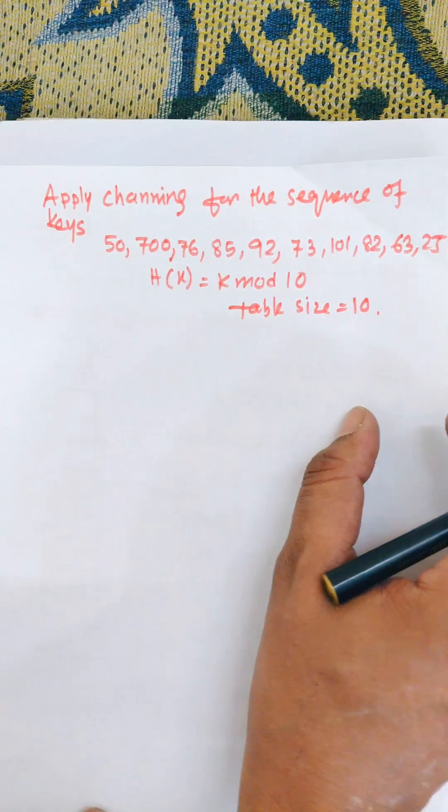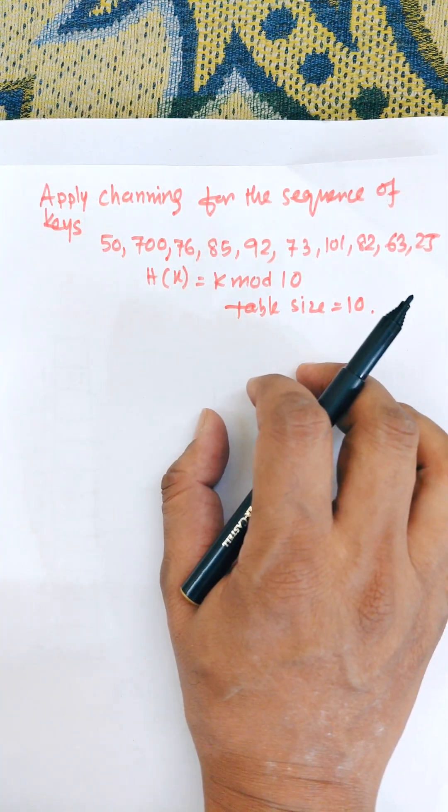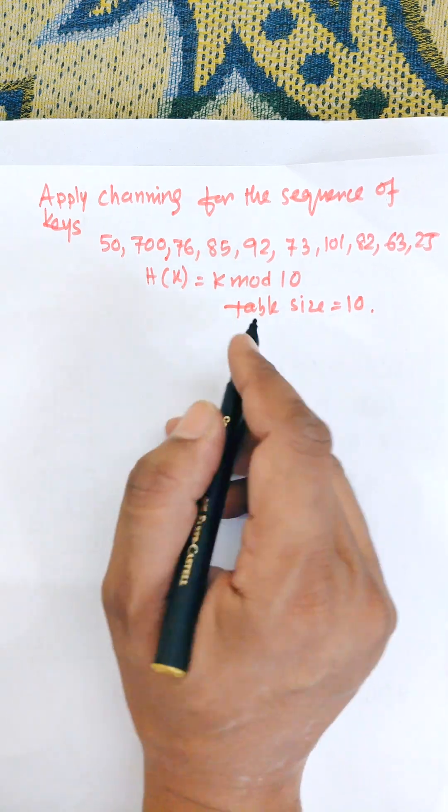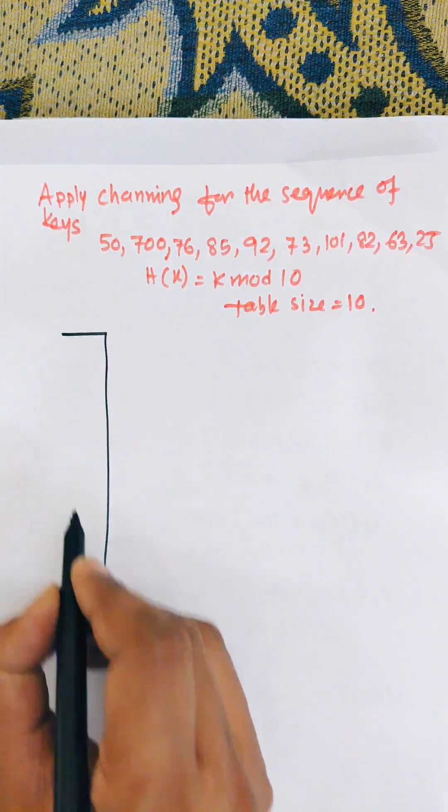Hi everybody, in this video I am going to apply chaining for the sequence of keys. Chaining is one of the collision resolution techniques where a linked list is used. Here table size is 10. First of all, you draw the table.